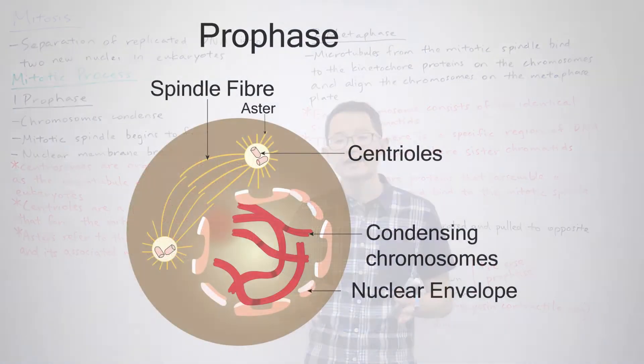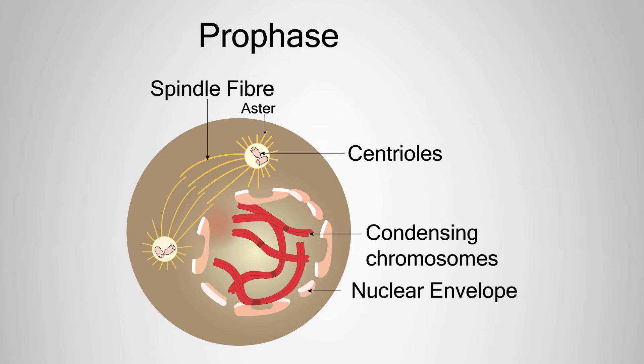In prophase, you can see in this diagram, three key events occur: the chromosomes condense, the mitotic spindle which is made of microtubules begins to form, and the nuclear membrane breaks down.